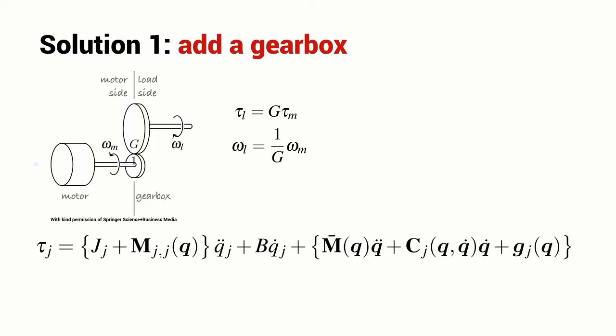Torque is actually more useful than speed. We can see here the relationship between torque and velocity on the output side of the gearbox indicated by the subscript L, L meaning the load side and torque and velocity on the input side denoted by the subscript M.